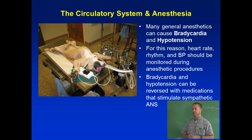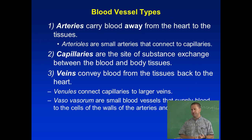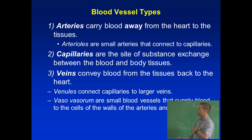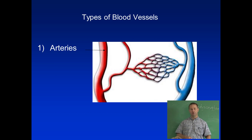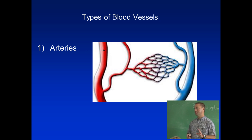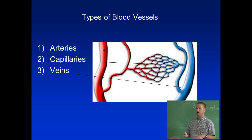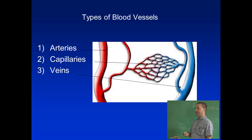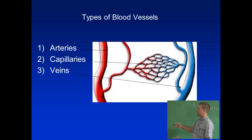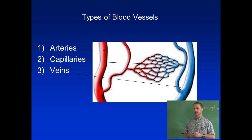Now onto blood vessels. Arteries, veins, and capillaries — veins carry blood back to the heart. When you open your cat in lab, they may be color-coded with double-injected cats: arteries injected with red latex, veins with blue. Arteries bring high-pressure blood from the heart; capillaries are where exchange of nutrients happens; veins carry low-pressure blood back to the heart. Which one has the thickest wall? Arteries, because they're under high pressure.